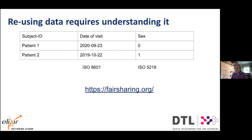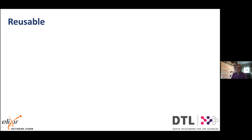For many of these things, standards exist. For dates, we have ISO 8601. For sex, we have ISO 5218 — though ISO 5218 may be too simple for medical research, just having codes for men or women; if you need something more complicated, it also exists. Go look at fairsharing.org — you will find these kinds of standards, as well as standards for encodings, formats, and everything else.